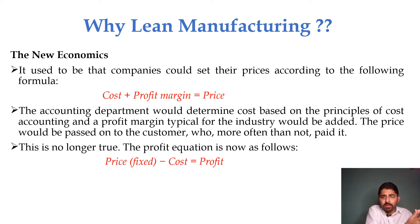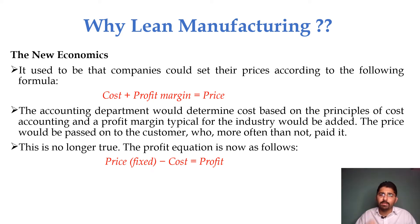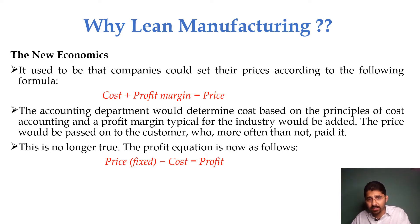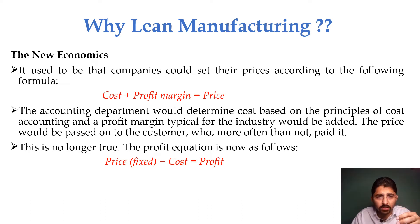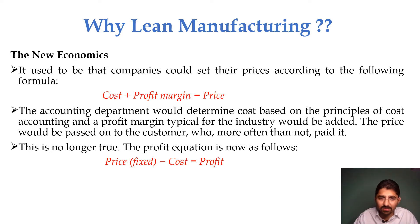There are two types of economy: the old economy prior to the 20th century, and the recent economy of the 21st century. In the old economy, companies were price-driven — if they wanted a good profit margin, they would increase the price. The equation was: cost plus profit margin equals price. The accounting department would determine the cost and add a typical industry profit margin, then pass that price on to the customer, who more often than not paid it.